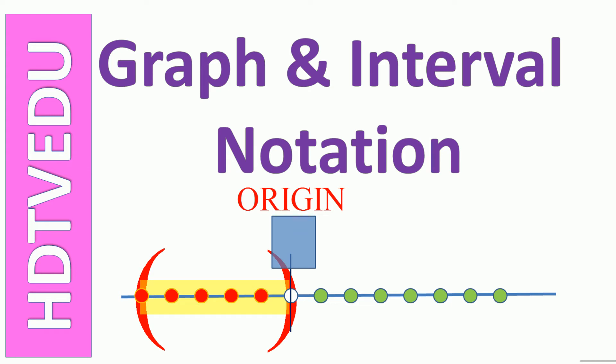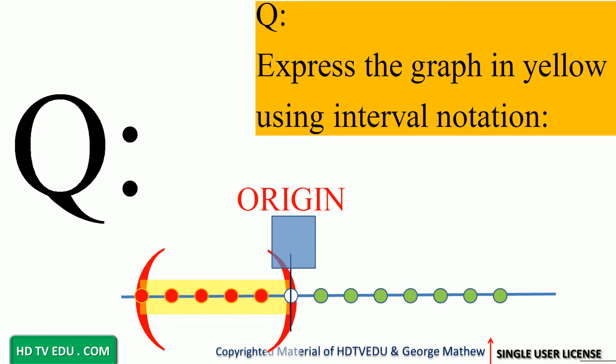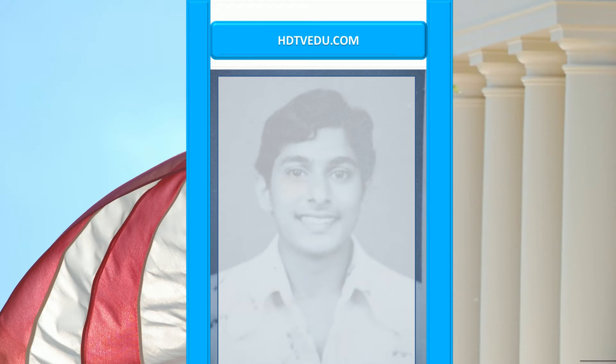We're given a graph in yellow and the question asks us to express the graph using interval notation. What are our points here? We have negative 1, negative 2, negative 3, negative 4, negative 5. This is 0, so our interval is between negative 5 and 0. The left end is negative 5, right end is 0.